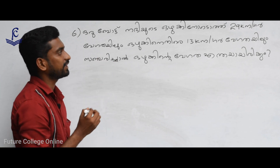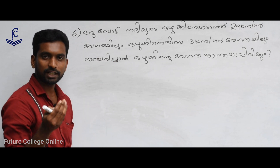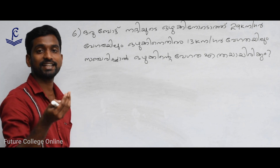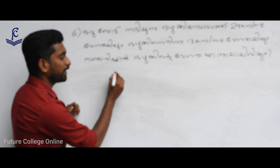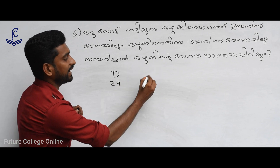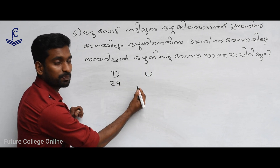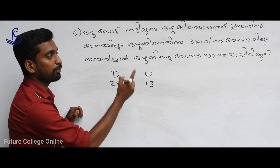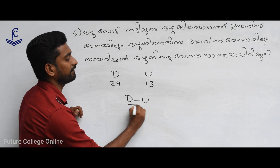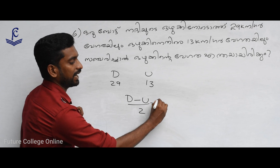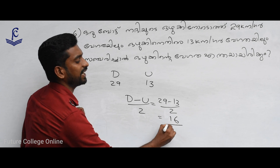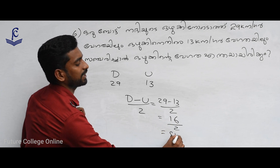Let's look at a boat which has a downstream speed of 29 km per hour and an upstream speed of 13 km per hour. Current speed equals D minus U divided by 2: 29 minus 13 divided by 2 equals 14 divided by 2.